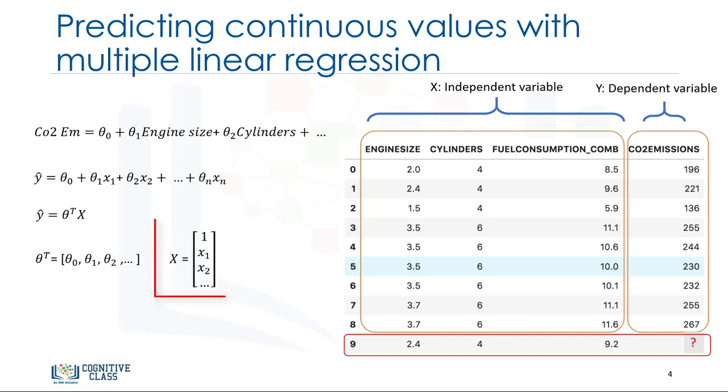And x is the feature set, which represents a car. For example, x1 for engine size, or x2 for cylinders, and so on. The first element of the feature set would be set to 1, because it turns the theta 0 into the intercept or bias parameter when the vector is multiplied by the parameter vector.